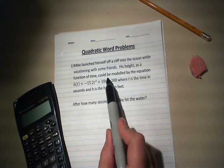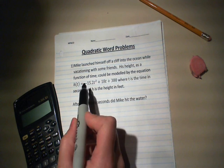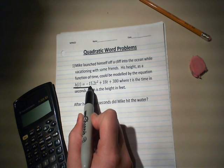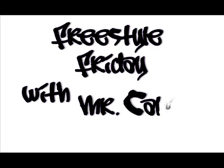Quadratic Word Problems. Mike launched himself off a cliff into the ocean while vacationing with some friends. His height as a function of time could be modeled by the function h(t) equals negative 15.2t squared plus 18t plus 380, where t is the time in seconds and h is the height in feet. After how many seconds did Mike hit the water?